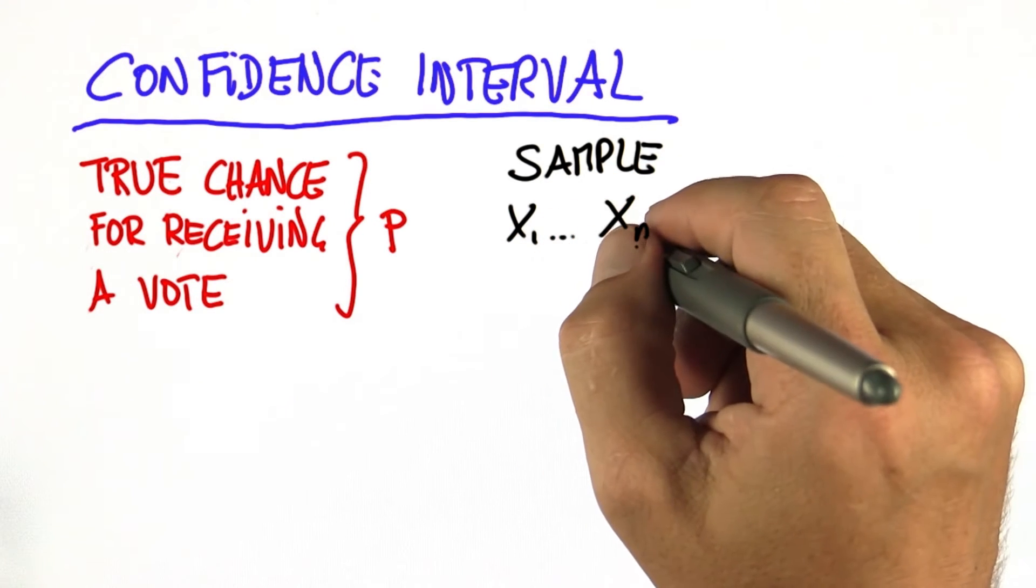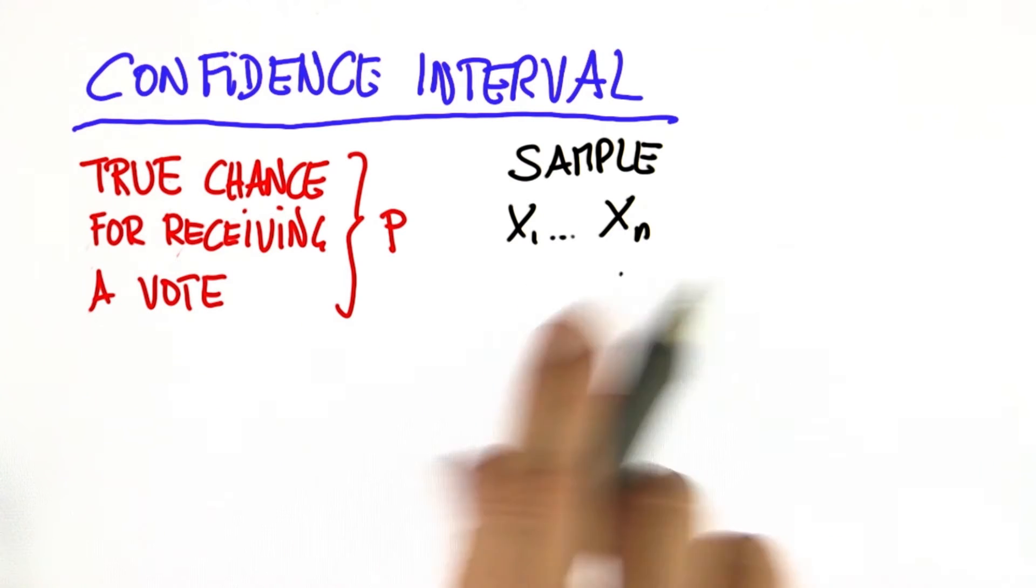In coin flipping, we flip n coins. In elections, we ask n randomly chosen people.